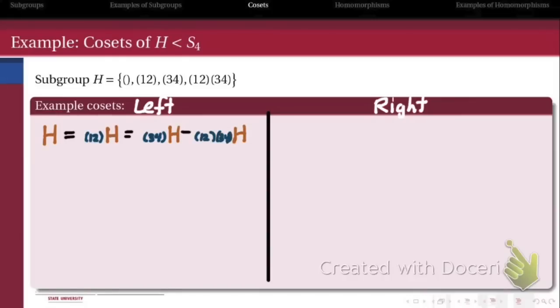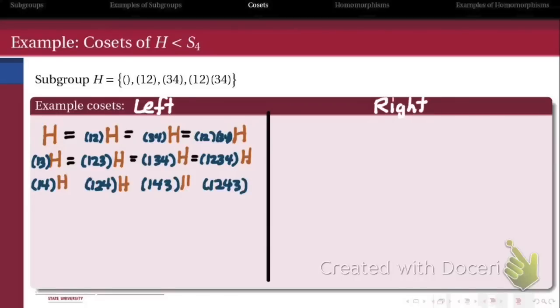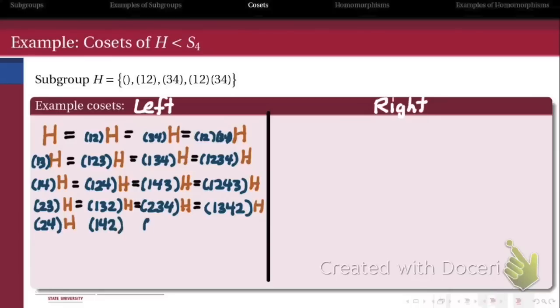Naturally, if I operate on them by the elements of H themselves, I get just H. Then we also looked at the left coset generated by (1,3). Then there's the left coset generated by (1,4). The left coset generated by (2,3). The left coset generated by (2,4).